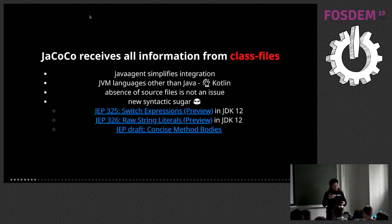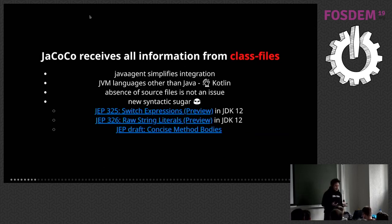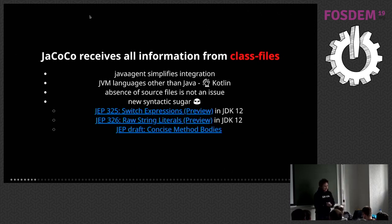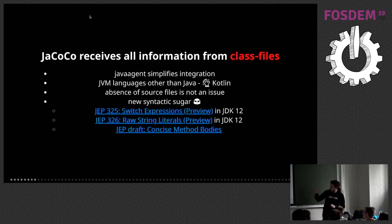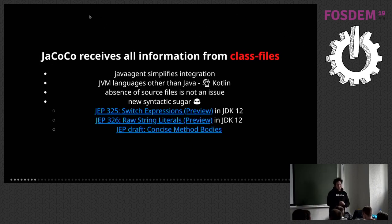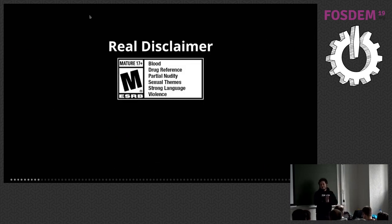And before we really start, here is a real disclaimer: there will be a little bit of blood out of the JVM. There will be naked Java compiler, naked Kotlin compiler. We're going to talk strong language — primary bytecode. Forget English, forget French. I will try to do intense violence to your brain.